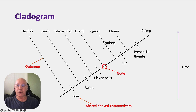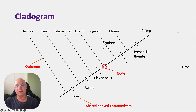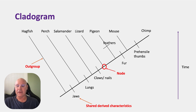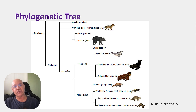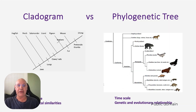Each one of these branches is called a node, and this is essentially a speciation event where new characteristics are developed. There's also something called a phylogenetic tree, which is similar but not exactly the same, so let's compare the two.